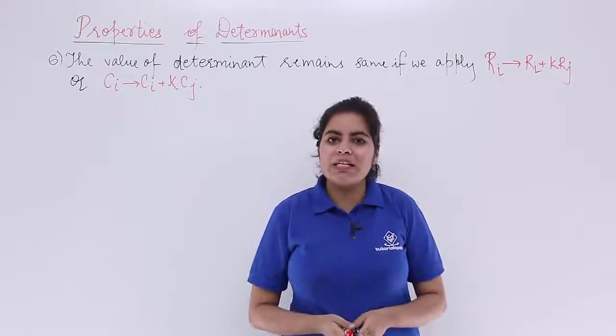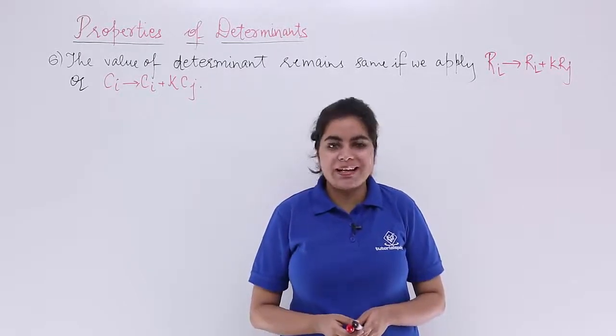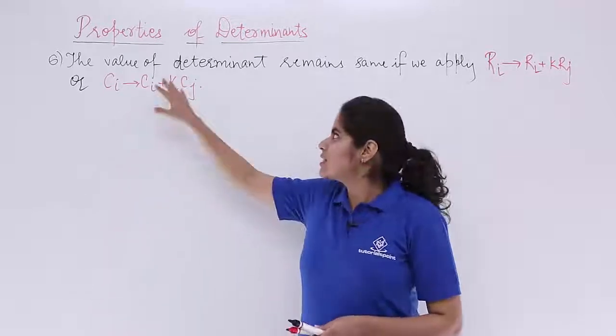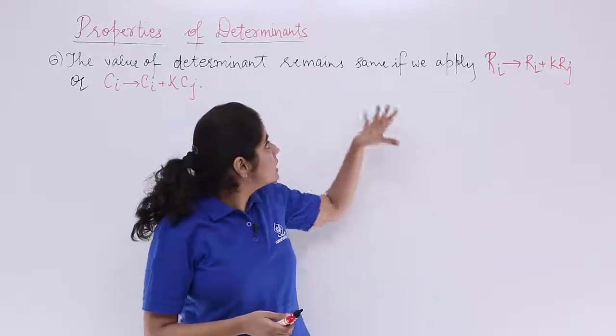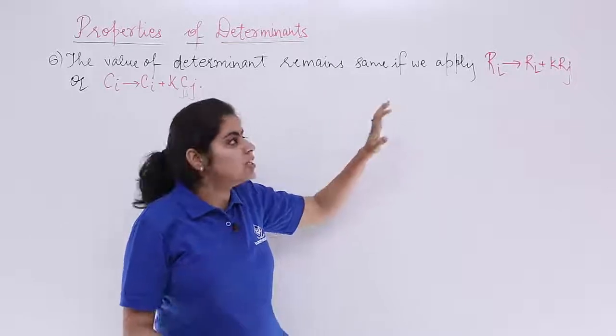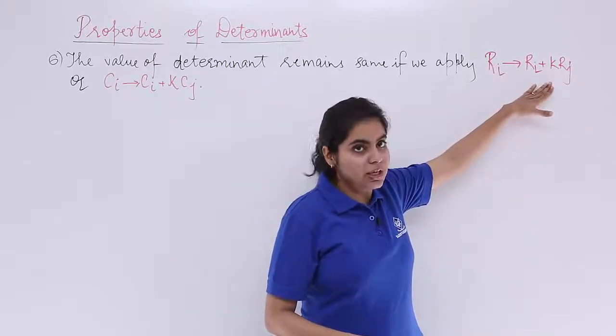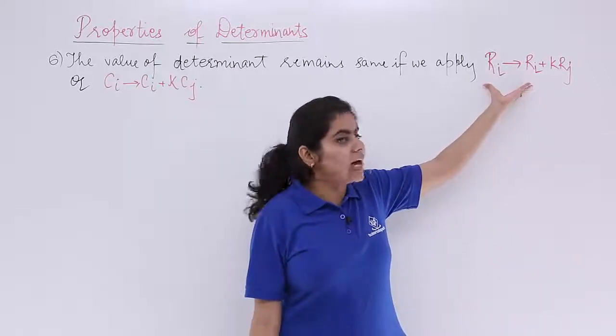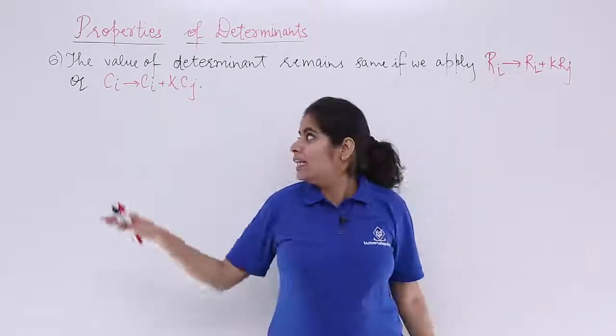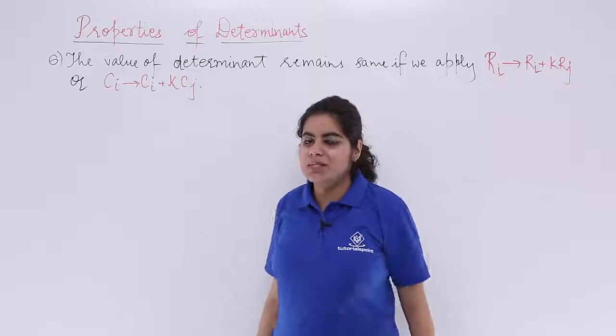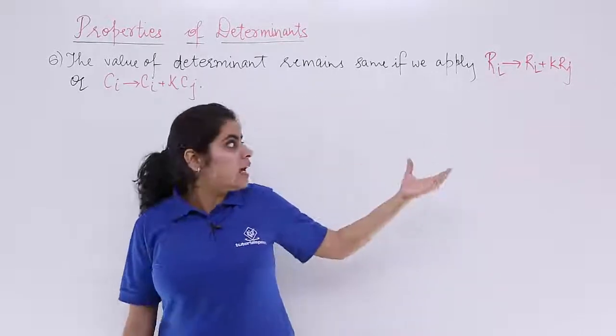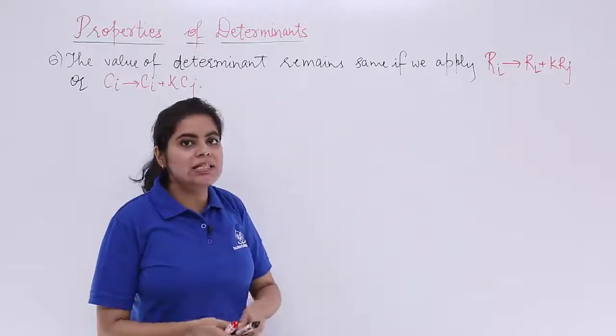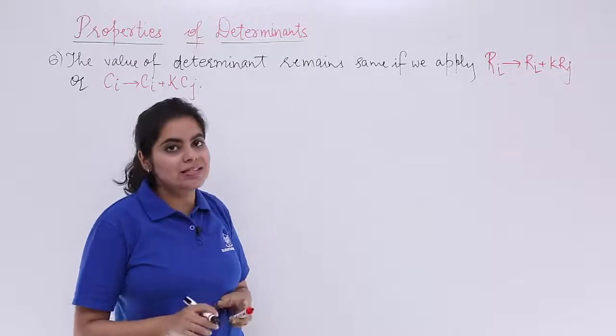Let's see what the property is and we'll be seeing the theoretical analysis. The property says the value of determinant remains same or remains unchanged if we apply some operation like Ri + kRj or Ci + kCj. This you can see is having R that means rows. This is related to C that means columns. So before understanding what theoretically it means, let's see an analysis and we'll understand it accordingly.